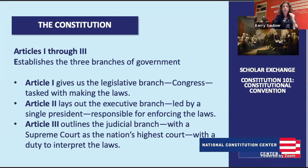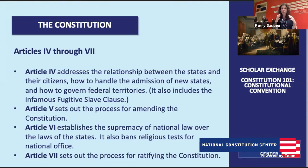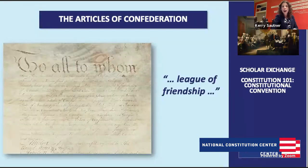Next we have Article 1, 2, and 3 — sets up Congress, the executive/presidency, and then the third is the judiciary and courts. Then Articles 4, 5, 6, and 7. All of this is on the Interactive Constitution as well as in the classroom section. We are on five minutes left, so we really need to talk about what happened — let's run through the compromises.